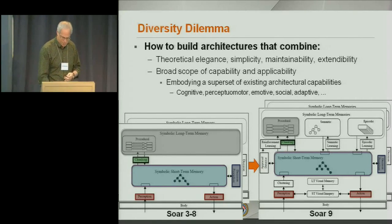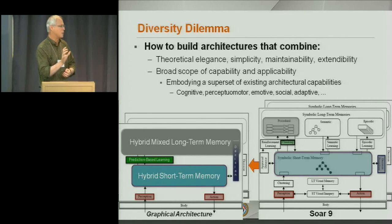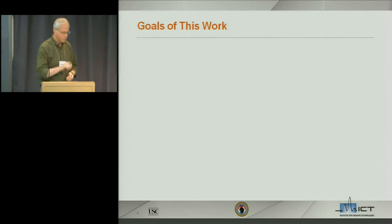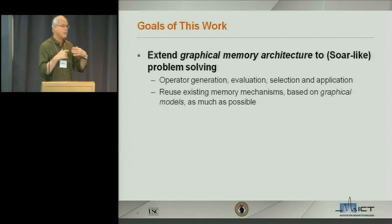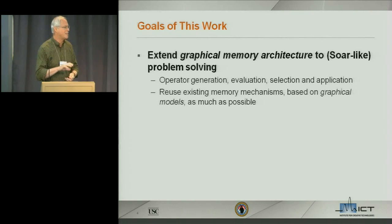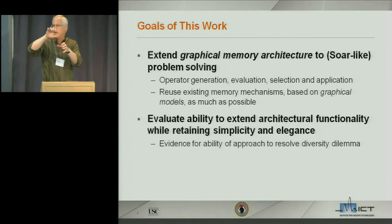One way to view what I'm trying to do is to take that same level of functionality — in fact go way beyond it — but with the kind of simplicity and elegance of the original system, by greatly generalizing each individual component. What I'll talk about today is extending a graphical memory architecture to SOAR-like problem solving: how to generate, evaluate, select, and apply operators internally within a memory structure to do problem solving over sequences of possible actions. The goal is to reuse as much as possible of the existing memory mechanisms based on graphical models, and evaluate whether adding new functionality requires adding new architectural boxes each time.